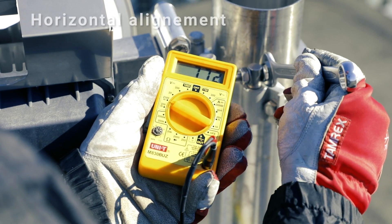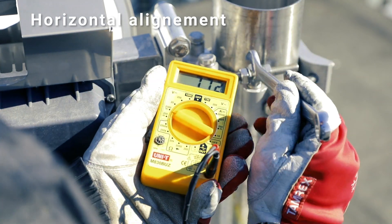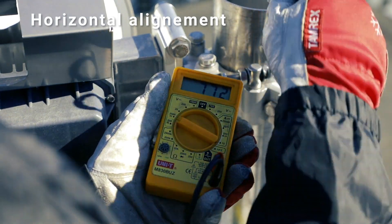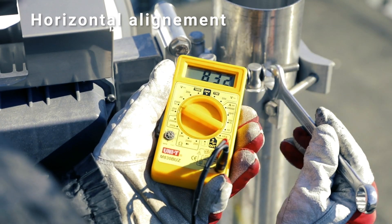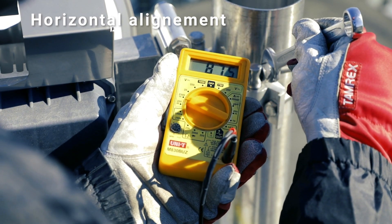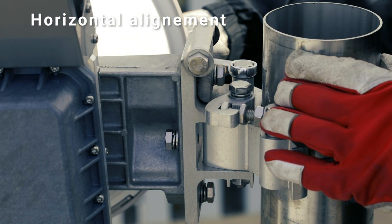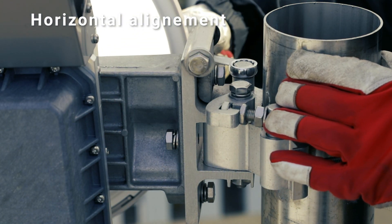After you've found the point where the signal is highest vertically, loosen the azimuth nuts and perform a full horizontal sweep by moving the antenna in the horizontal plane. Find the point where the signal is the best horizontally. Once the best signal is achieved, secure the horizontal plane fixation screws.